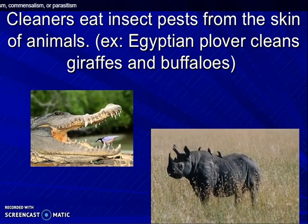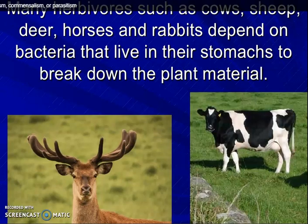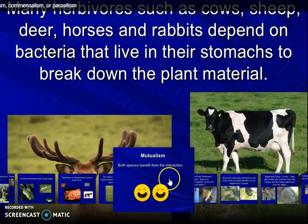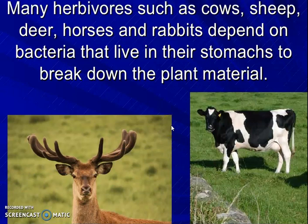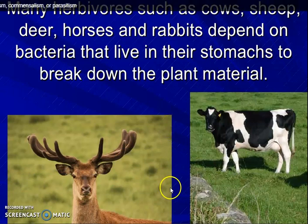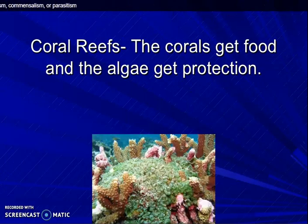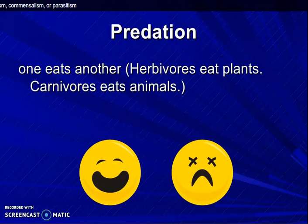Cleaners eat insects and pests from the skin of animals. For example, the Egyptian plover cleans giraffes and buffalos. Herbivores such as cows, sheep, deer, horses and rabbits depend on bacteria that live in the stomach to break down plant material. In coral reefs, the corals get food and the algae get protection.